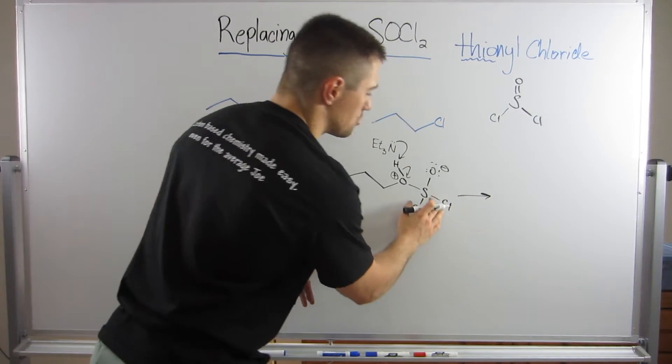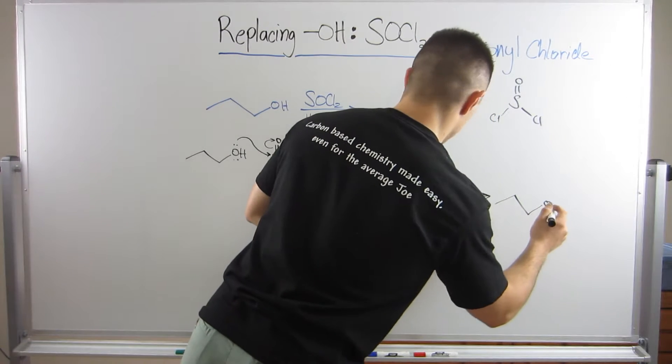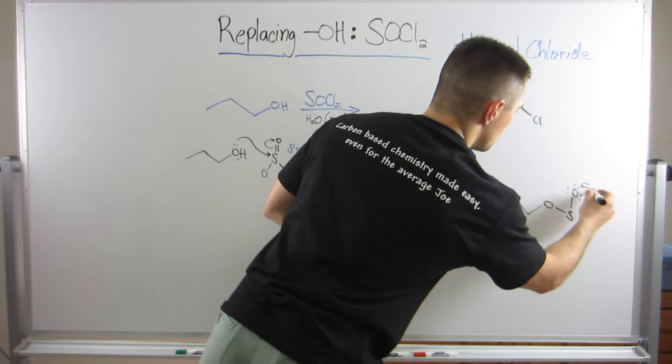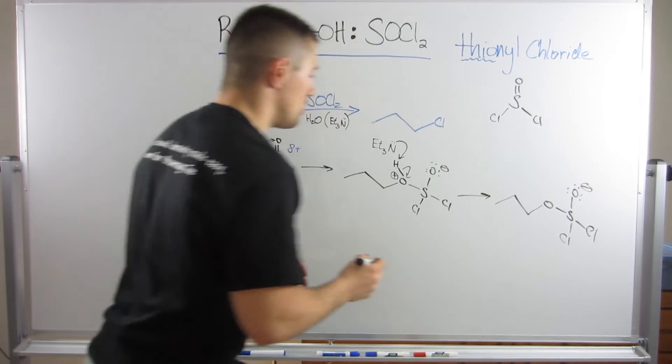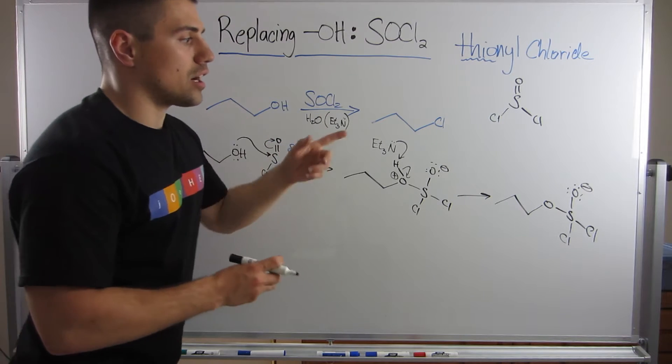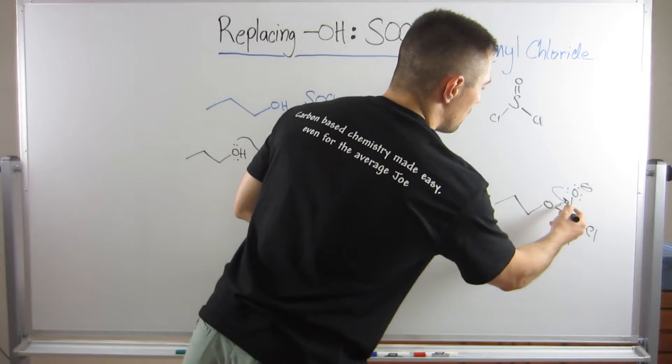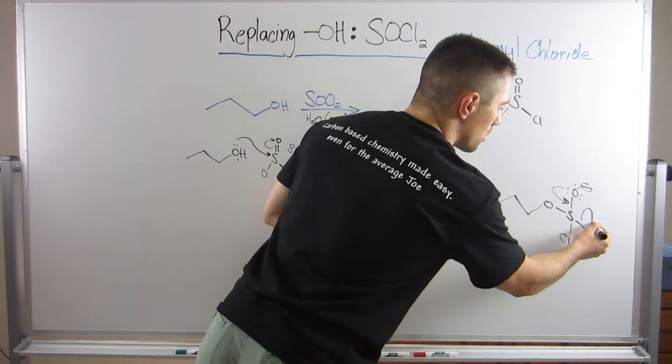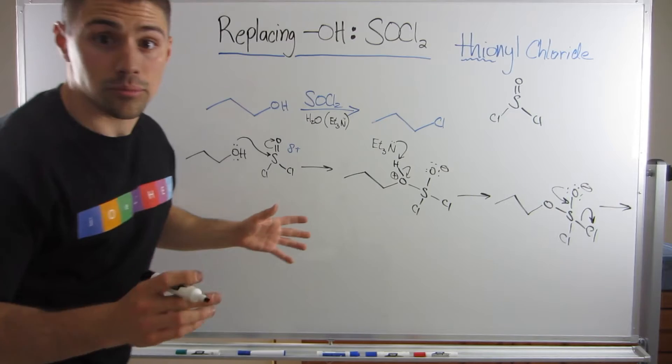So we still got that O minus on the oxygen, the two chlorines, and we are all set. So what's going to happen next? Well, that oxygen doesn't want to stay with that negative charge. What is actually going to happen is that these electrons will swing down, reforming a double bond to sulfur, and now what we're going to do is we're going to boot one of the chlorines, because chlorine is a good leaving group, right? That is no problem, we have no problem doing that.